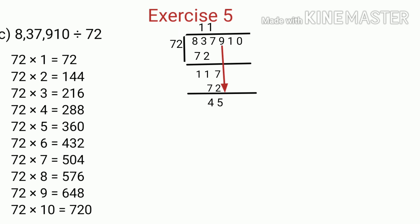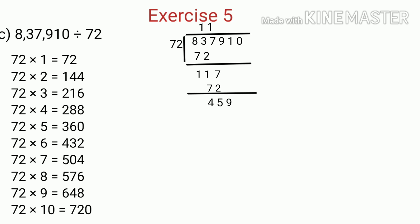Now again we bring down the next digit, that is 9. So now we compare 459 and 72. Since 459 is greater than 72, we find a product of 72 which is equal to, or less than, and nearest to 459. We get the nearest product as 432. So we write 6 in the quotient, because 72 multiplied by 6 is equal to 432. And then we subtract 432 from 459, which is equal to 27.